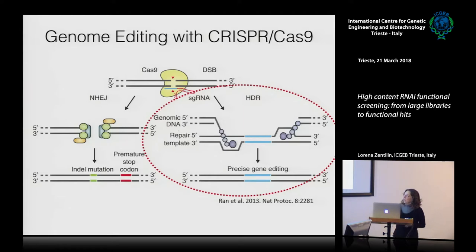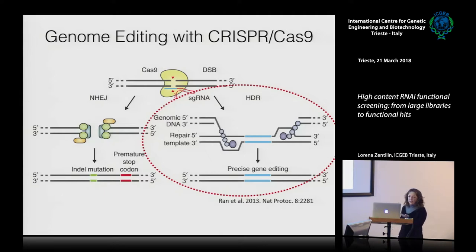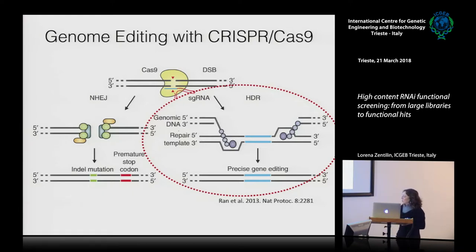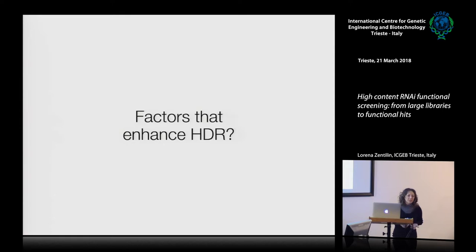But NHEJ is not good for correcting a mutation. What we want is homologous recombination, which occurs at the end of DNA replication when a paired strand is available for recombination, or if a suitable template can be used to replace the mutated strand. However, this process in mammalian cells is a very rare event. CRISPR by itself is an enhancer of homologous recombination, but still the global efficiency is low.